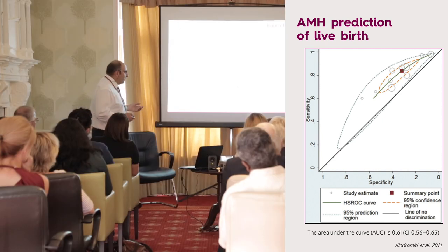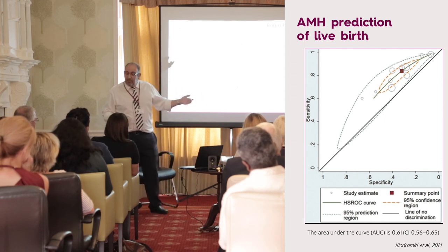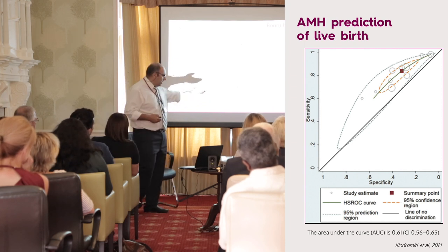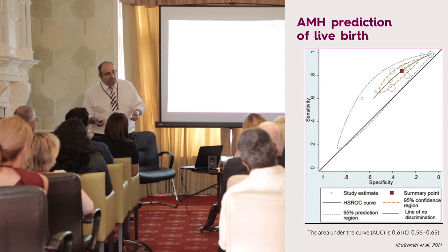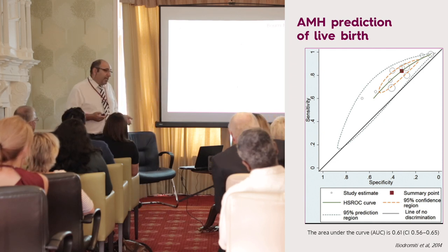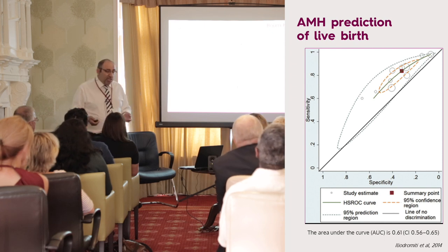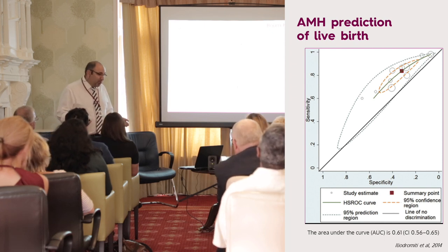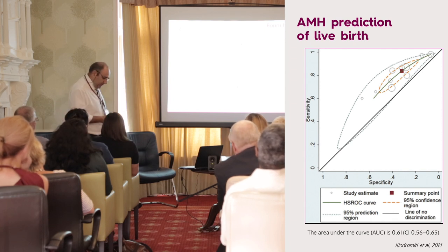If you look at AMH for predicting live birth during IVF treatment, the area under the curve is 0.6. That means if you have an AMH result for a woman, you can say with only 60% confidence whether she will have a baby or not — so that's not really very good for predictive testing.